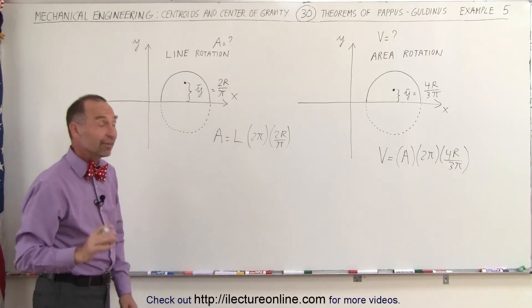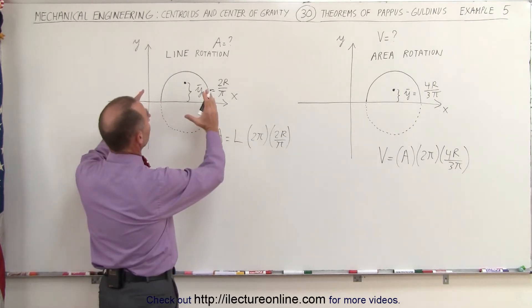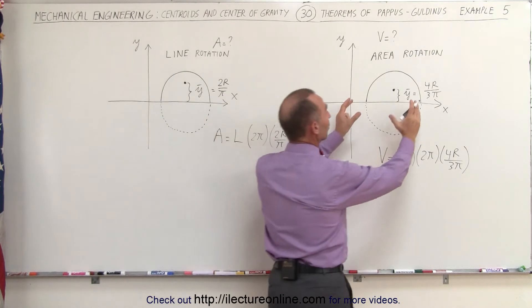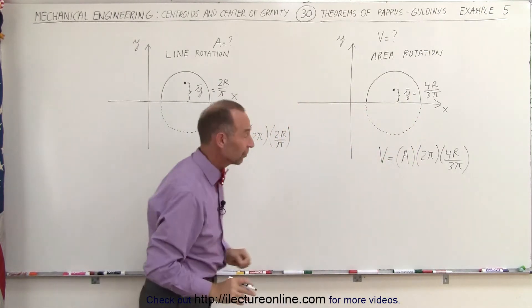Finishing the two equations up, let's see what we get. Of course, here we should get the surface area of a sphere, here we should get the volume of a sphere, and let's see if we get the right results.